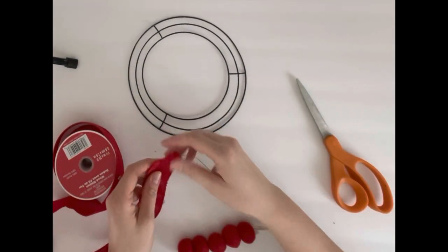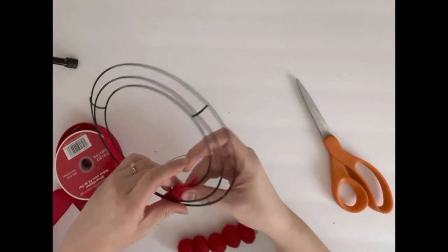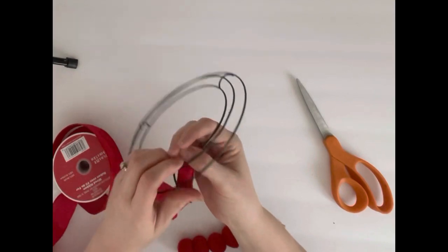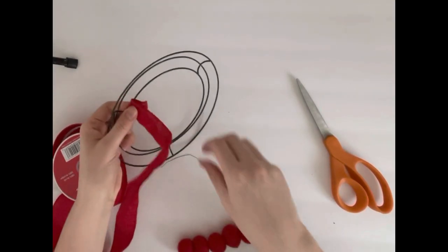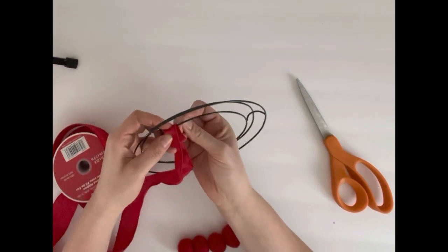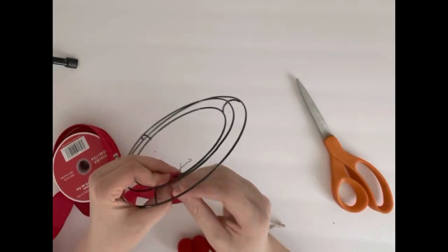Take the end of your ribbon and fold it in half. Wrap the ribbon around the innermost ring of the wire wreath form, and then take your floral wire and poke it through both parts of the ribbon so that you can secure the ribbon onto the wire wreath form.